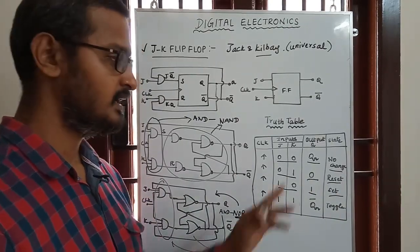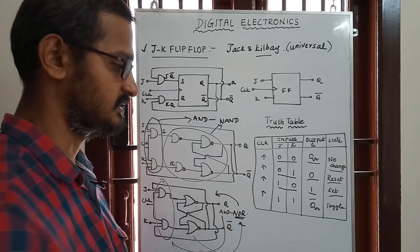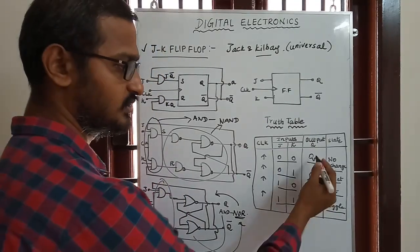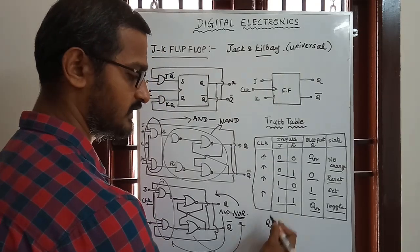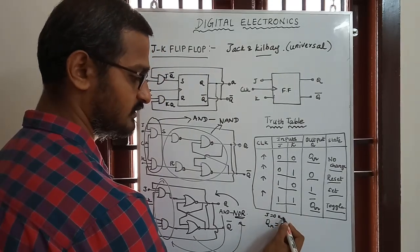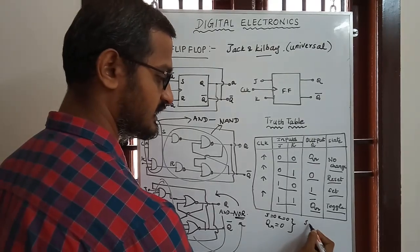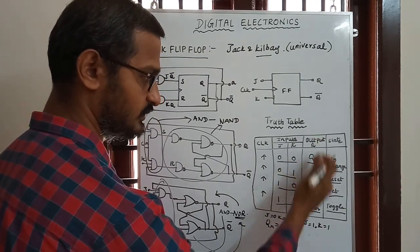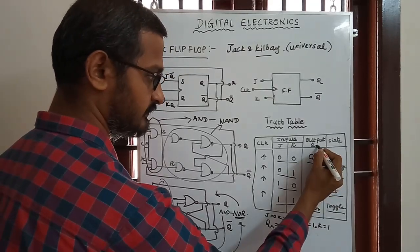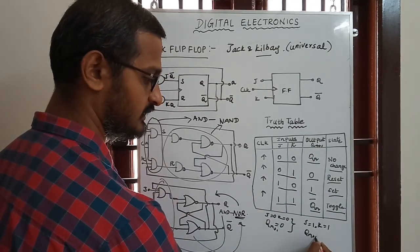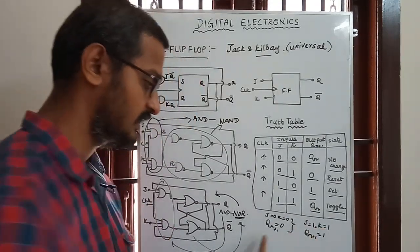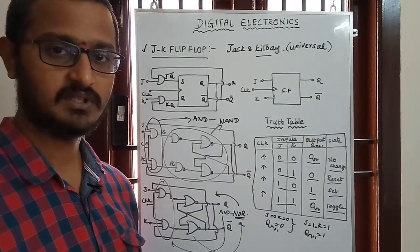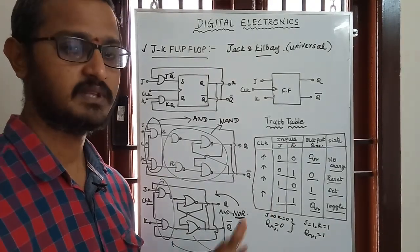When J is 1 and K is 1, we have the toggle condition. For example, if Q is currently 0, the output toggles to 1. If Q is 1, the output toggles to 0 — it goes to the opposite condition. So when J=1, K=1, that is the toggle condition where the output is the complement of the present state.